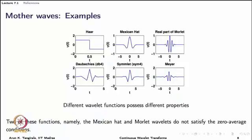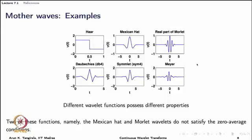Some examples of mother waves: we have the Haar wavelet, historically the first known wavelet proposed by Haar, which has a discontinuous nature. We have the Mexican hat and the real part of Morlet, since Morlet waves are generally complex wavelets. Both belong to the Gaussian family. Then there is the Daubechies wavelet, which has nice properties relevant to discrete wavelet transforms, and symlets which are similar to Daubechies but with different phase characteristics, and the Meyer wavelet.